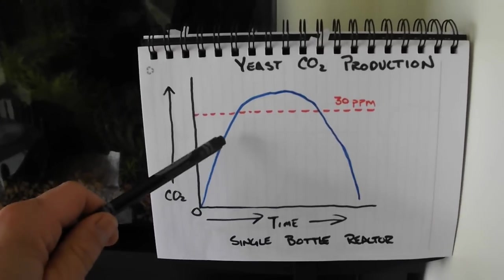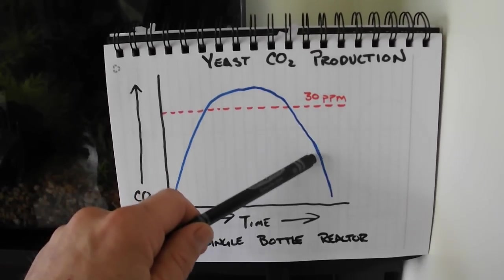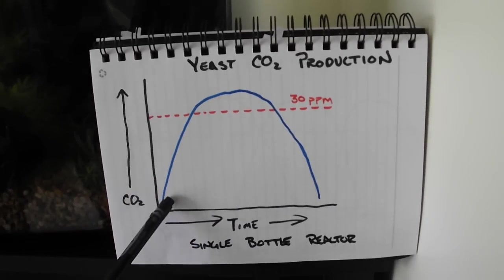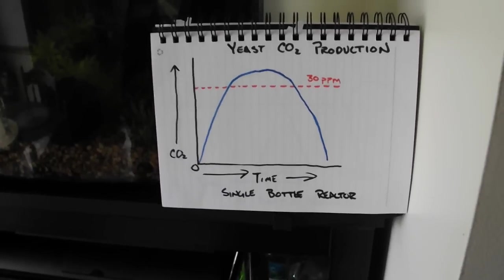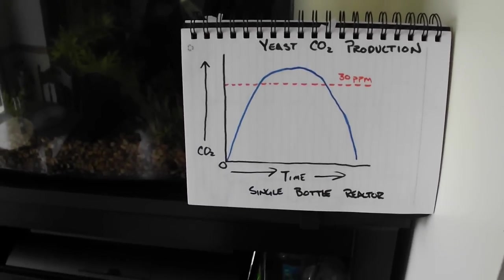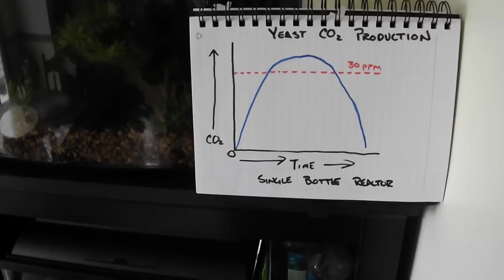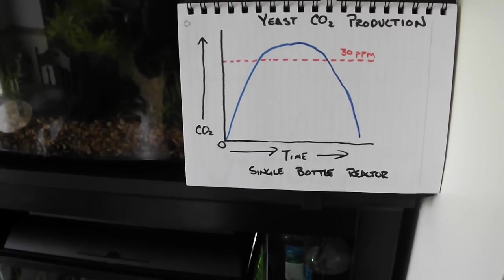Fluctuations in CO2 are one of the leading or main causes of these invasive algaes such as blackbeard, staghorn, and alike.